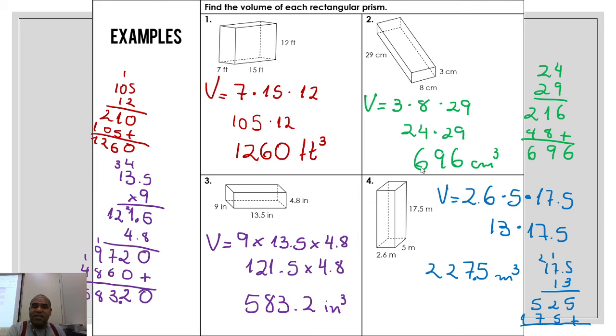Number 3, as you know, the same thing, but here we have the length 9, the width 13.5 with decimals, and the height 4.8. Just multiply, guys. Remember, we learned already how to multiply decimals. Number four, the same thing. We have here the length 2.6, the width 5, and the height 17.5. Multiplying together.